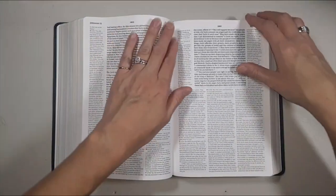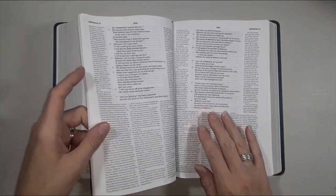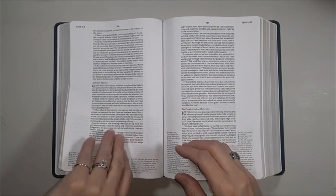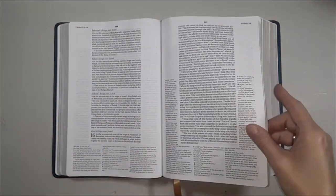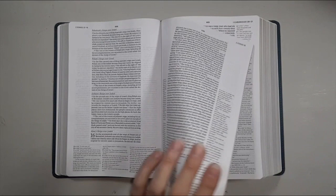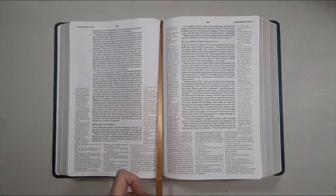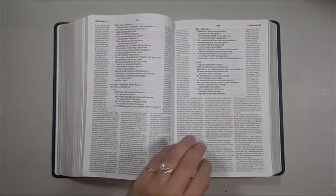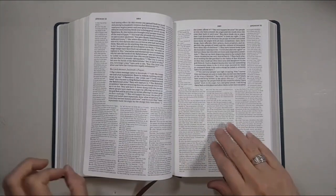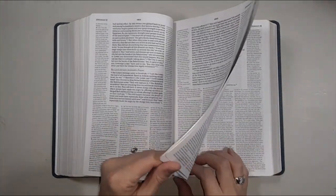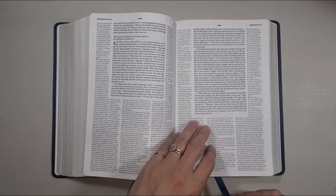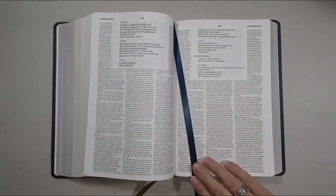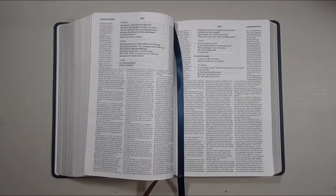This one has two really nice ribbon bookmarks. We have this pretty gold color and then this beautiful teal bookmark that coordinates really well with the color of the cover of the Bible itself.